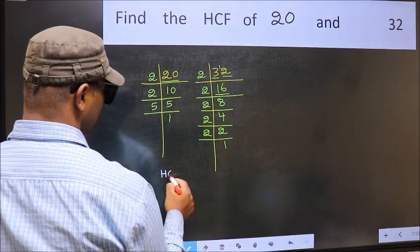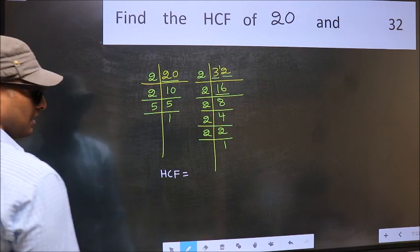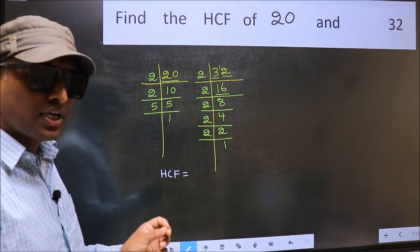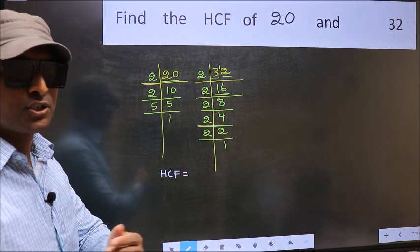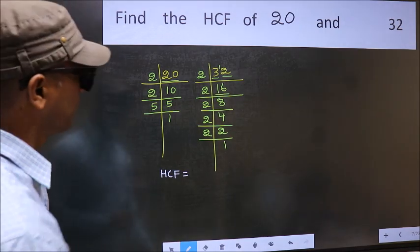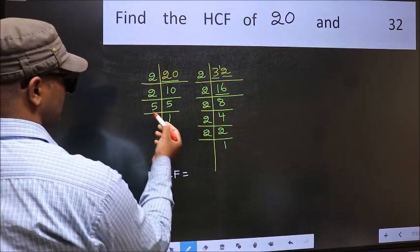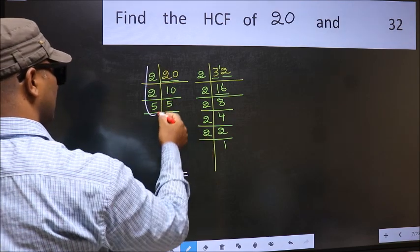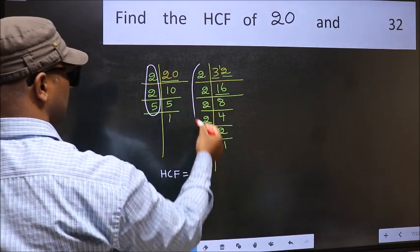Therefore, our HCF is the product of the numbers which should be present in these two places. That is here and also here.